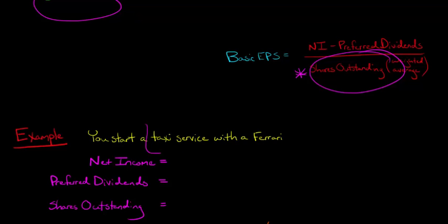Let's say that you have a taxi service. You get a hold of a Ferrari and you say, Hey, I've got some nice wheels here. I'm going to do a taxi service. Your net income for the period is $120,000, and you have zero preferred dividends. Your shares outstanding, let's say that is 30,000. To make this easy, let's assume there are no changes during the year. Just 30,000 shares outstanding during the year.